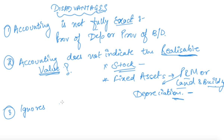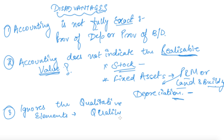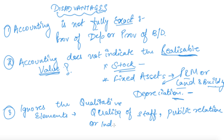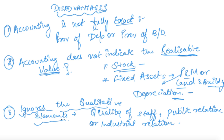The third limitation is that accounting ignores the qualitative elements, such as the quality of staff, public relations maintained by the firm, industrial relations between industries, and the quality of competition one industry has with another. So accounting does not include in its system the qualitative elements of the firm.